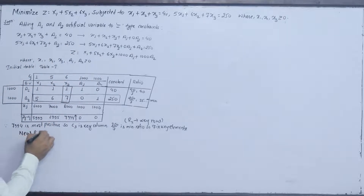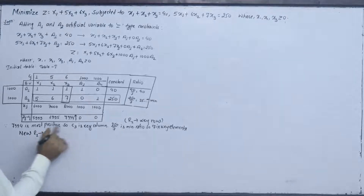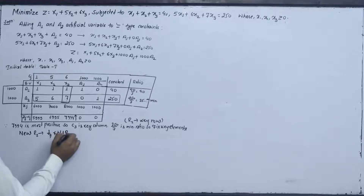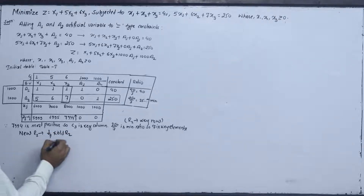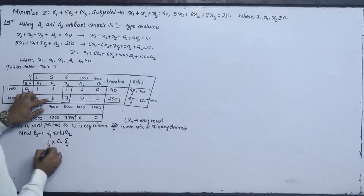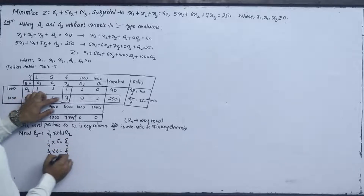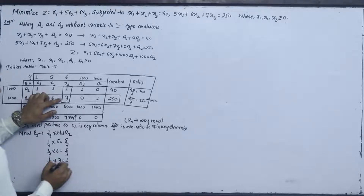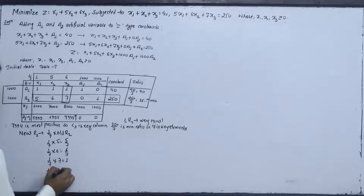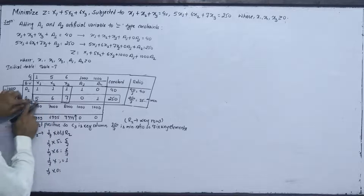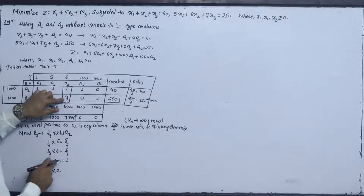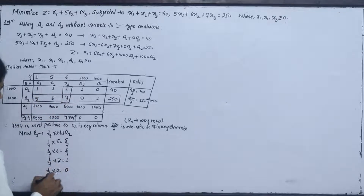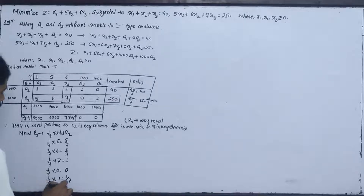New R2 will be old R2 multiplied by 1/7 into old R2. This gives: 1/7 into 5 equals 5/7, 1/7 into 6 equals 6/7, 1/7 into 7 equals 1, 1/7 into 0 equals 0, 1/7 into 7 equals 1, and 1/7 into 250 equals 250/7. This is the new R2 row.